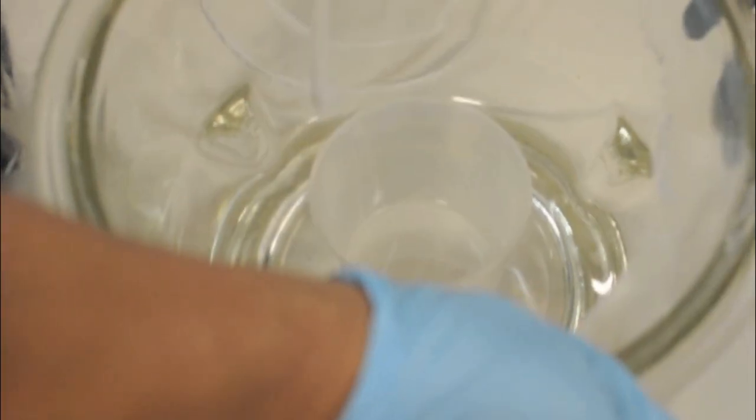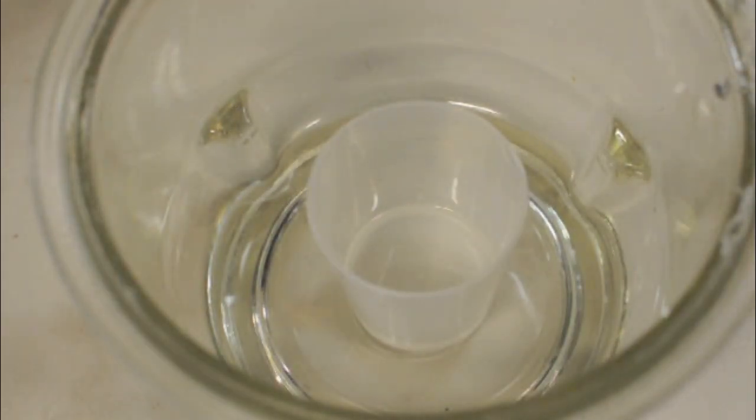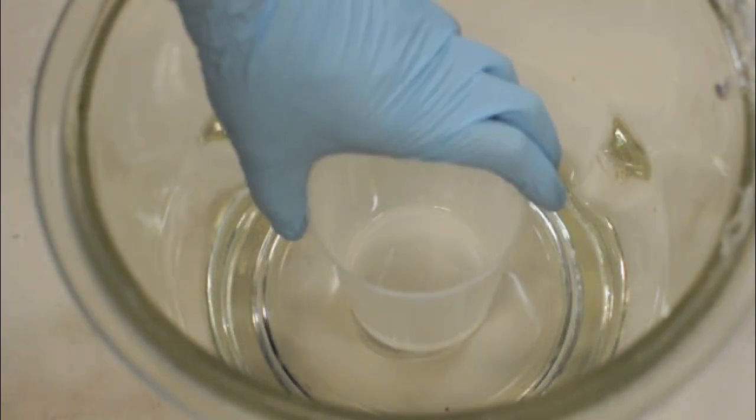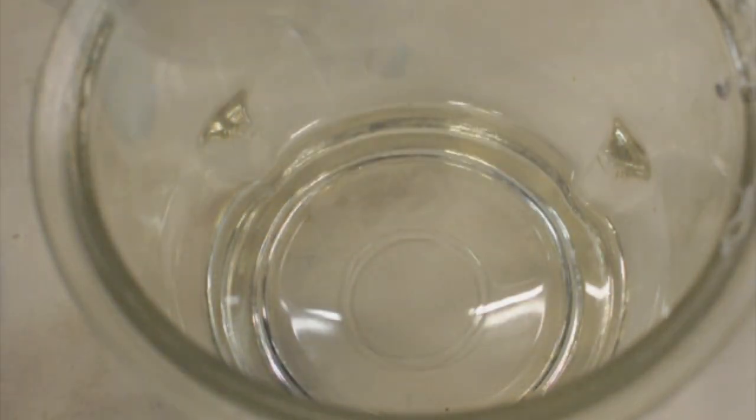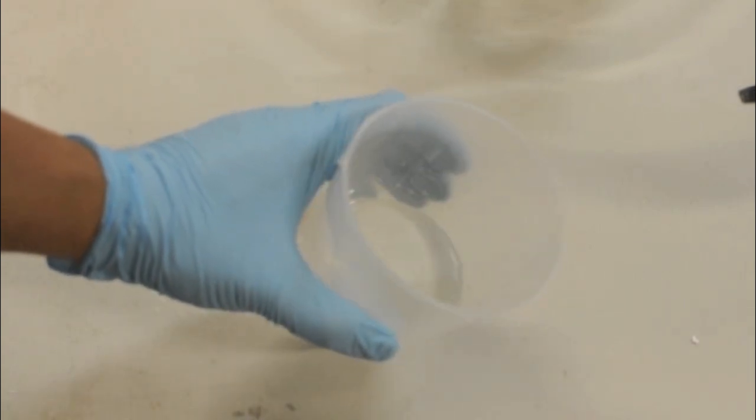Once all the bubbles have risen to the top and popped, remove the vacuum from your degassing chamber and remove the resin. The result should be bubble-free epoxy ready for your casting.